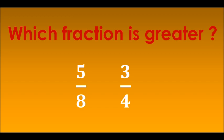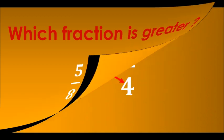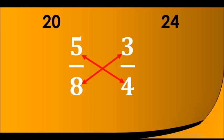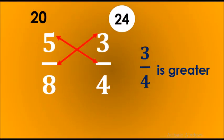We will cross multiply the two fractions. Now, cross multiplying is very simple children. 4 times 5 is 20 and 8 times 3 is 24. Since we have 24 to be greater than 20, it means 3 upon 4 is the greater fraction.